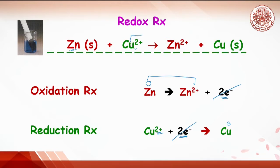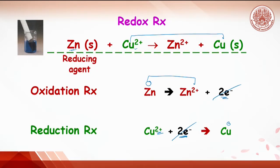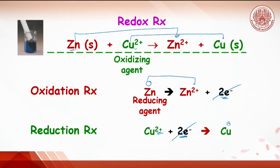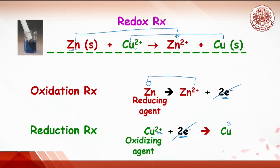Zinc strip reduces the oxidation number of copper, so zinc is called the reducing agent. On the other hand, copper ion increases zinc's oxidation number, so copper ion is called the oxidizing agent. Do not confuse between oxidation reaction and reducing agent, and also reduction reaction and oxidizing agent.